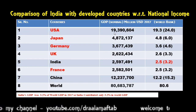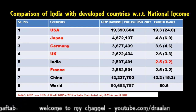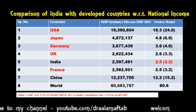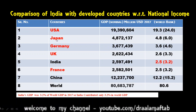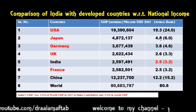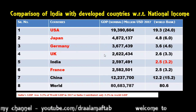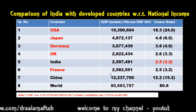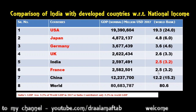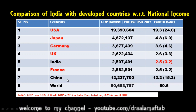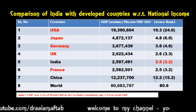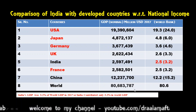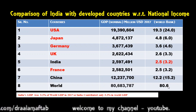USA's total GDP in nominal term was 19.390604 million US dollar, which you can convert into trillion as 19.3 trillion dollars. Japan was 4.8 trillion dollars, Germany 3.6 trillion dollars, UK 2.6 trillion dollar. India was 2.5 trillion dollars, whereas France was also 2.5 trillion dollars. China, which is a developing economy like India, had GDP in nominal terms of 12.2 trillion dollars in 2017, whereas the world GDP in nominal term was 80.6 trillion dollars.